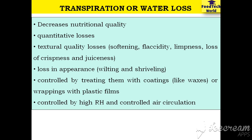The third internal factor is transpiration — the loss of water from the surfaces of fruits and vegetables by evaporation into the environment. The outer covering of the commodity regulates water loss. Transpiration causes deterioration including nutritional quality loss, quantitative loss, textural quality loss, and loss in appearance. It is controlled by treating commodities with waxes or other surface coatings, wrapping with plastic films, and by maintaining high relative humidity and controlling air circulation in the storage environment.